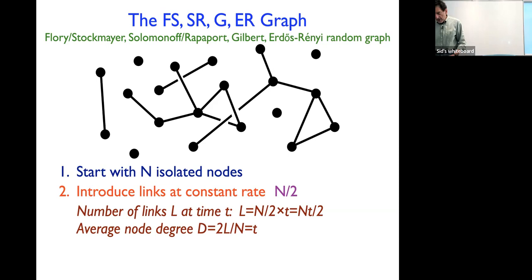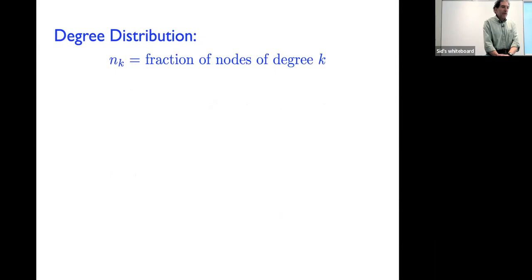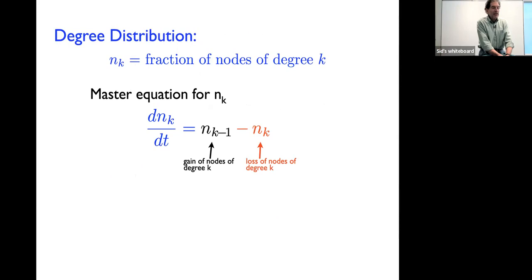Let me define n_k as the fraction of nodes of degree k — that is, N_k (the number of nodes of degree k) divided by the total number of nodes N. This quantity satisfies a very simple equation. In the equation, black terms are gain terms and red terms are loss terms.